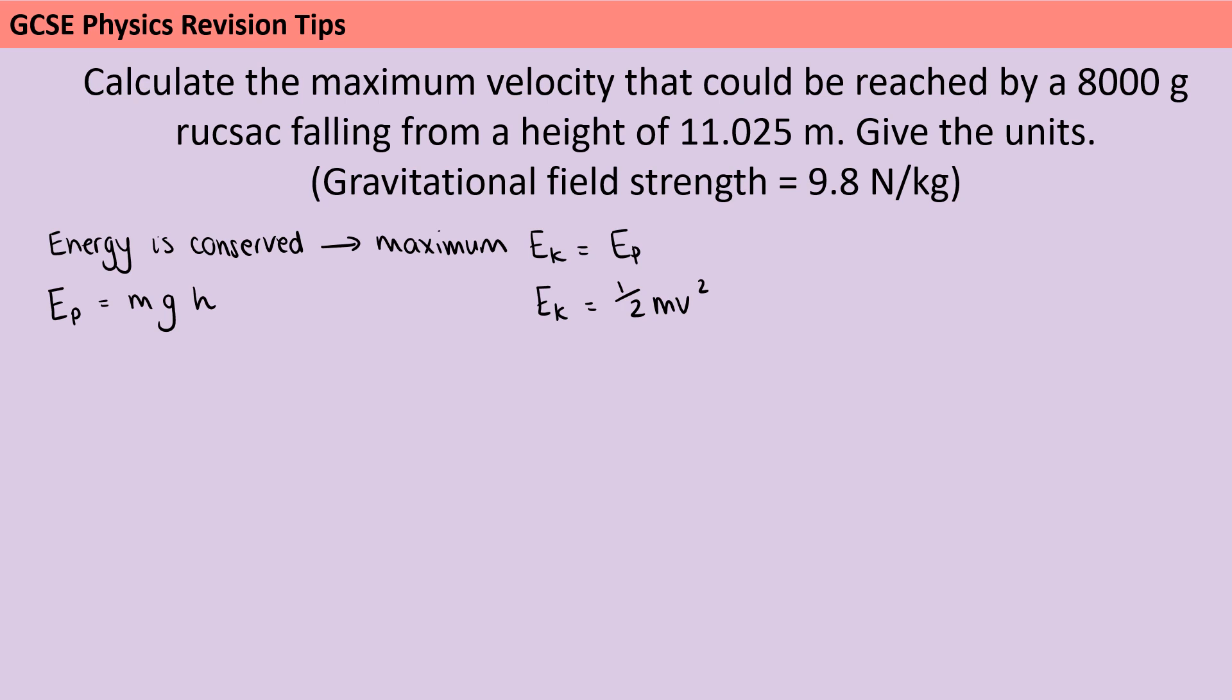Now, the next little snag that I've added into this question to take account for the fact that I can't give you marks for recalling things you haven't had to recall is that our mass has been given in grams. But as we know, all of these calculations, we need our mass to be in kilograms, which is the standard international unit. So I'm going to need 8 rather than 8000. And then they've given me the gravitational field strength. That's 9.8. And the height is 11.025. And that's in the question. If I multiply all of those together, I get 864.36 joules.